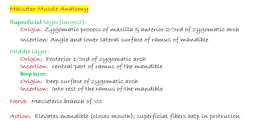Masseter muscle covers the lateral surface of the ramus of the mandible and it has three layers: superficial layer, middle layer, and deep layer. Superficial layer arises from the zygomatic process of the maxilla and anterior two-thirds of the zygomatic arch, and inserts on the angle and lower lateral surface of the ramus of the mandible. Middle layer arises from the posterior one-third of the zygomatic arch and inserts on the central part of the ramus of the mandible.